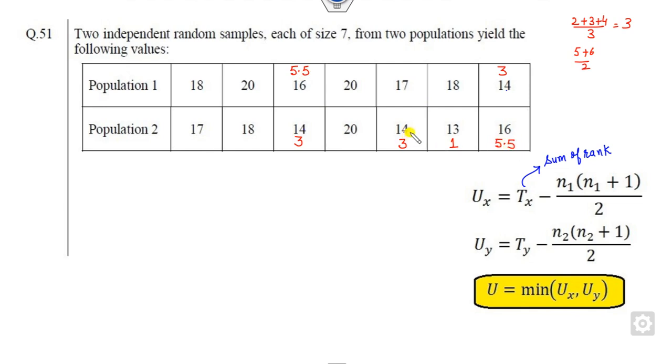Look what the next smallest number. Next smallest number is 17. So this again appears 2 times. The position is my 7 and 8. So it's 7.5, 7.5. Look what the other number is 18, 18 and 18. This appears 3 times. So it will be 9, 10 and 11 by 3. So it will be my 10. You can mark this number as 10. And again the last number is 20. Again it appears 3 times. So it will be my 12, 13 and 14. So it will be my 13, 13 and 13.